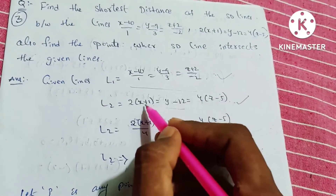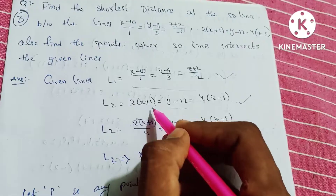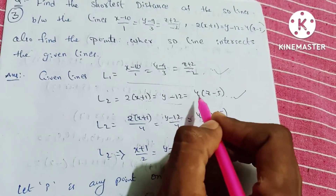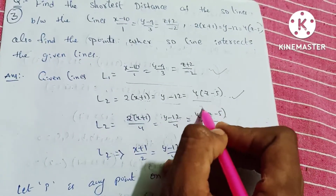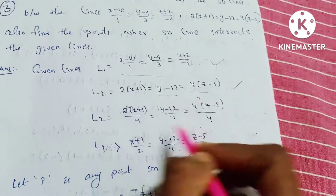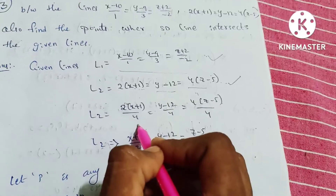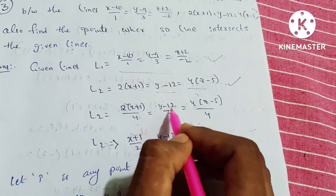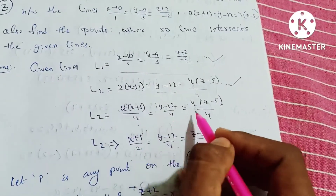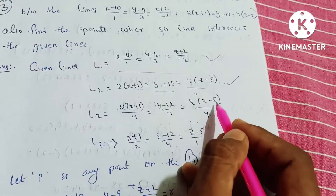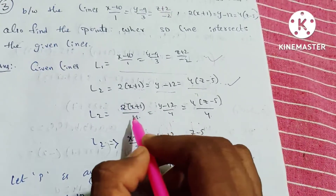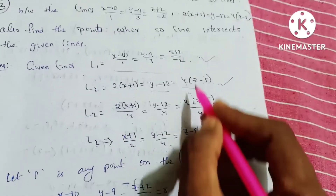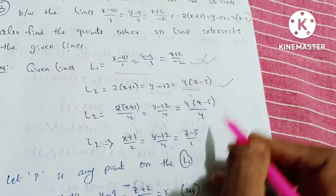Here, x minus x1 by A. We have 4 here, so 4 is divisible. So 2 into 4. So x plus 1 by 2. Same: y minus 12 by 4. 4 cancels, then z minus 5 by 1. So 4 is divisible. This is line 1 and this is line 2.